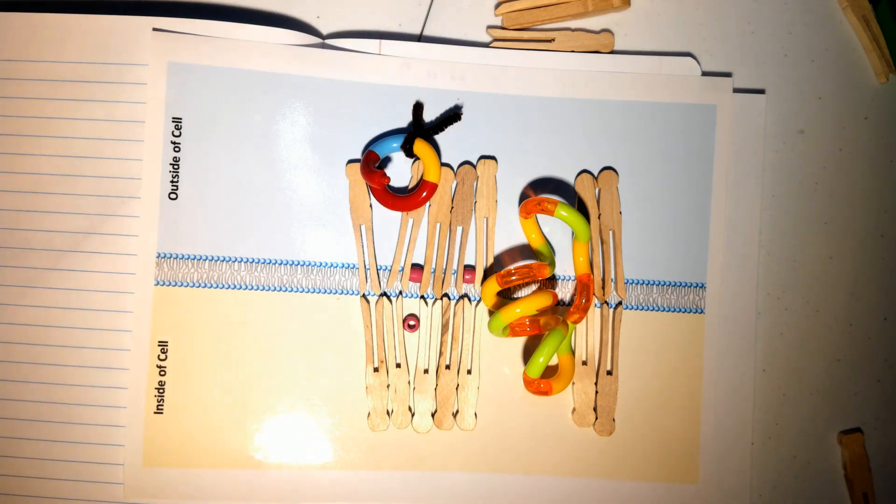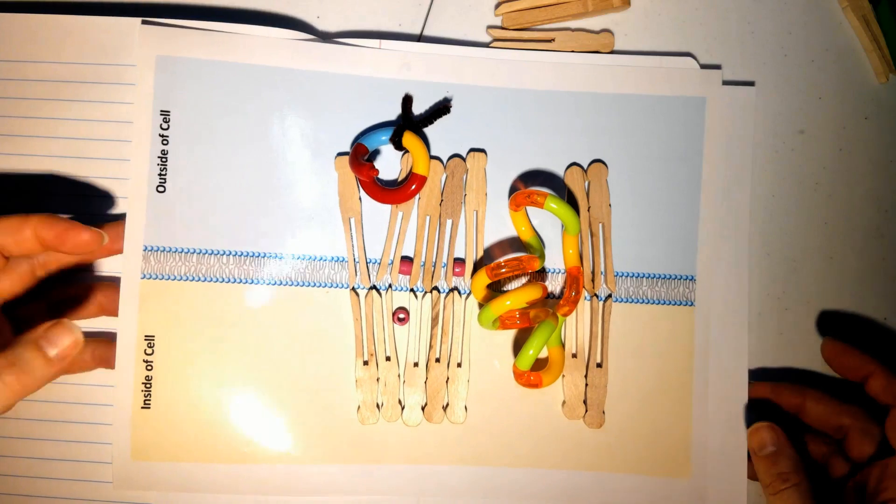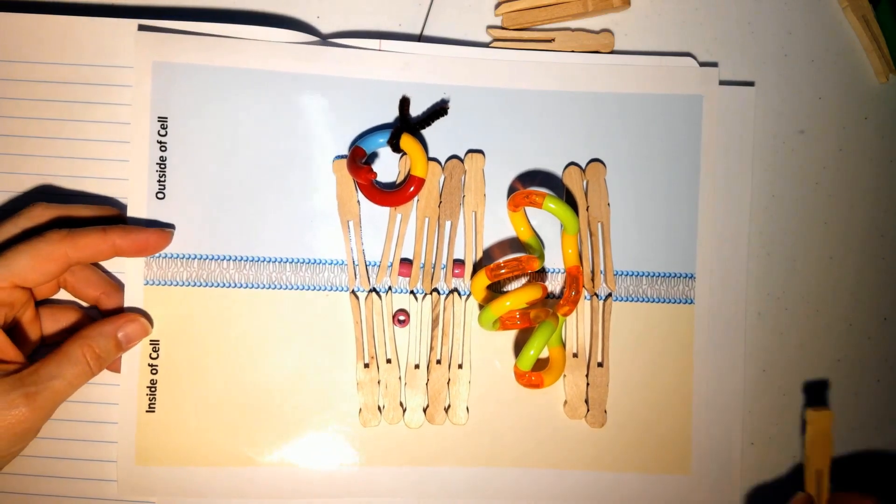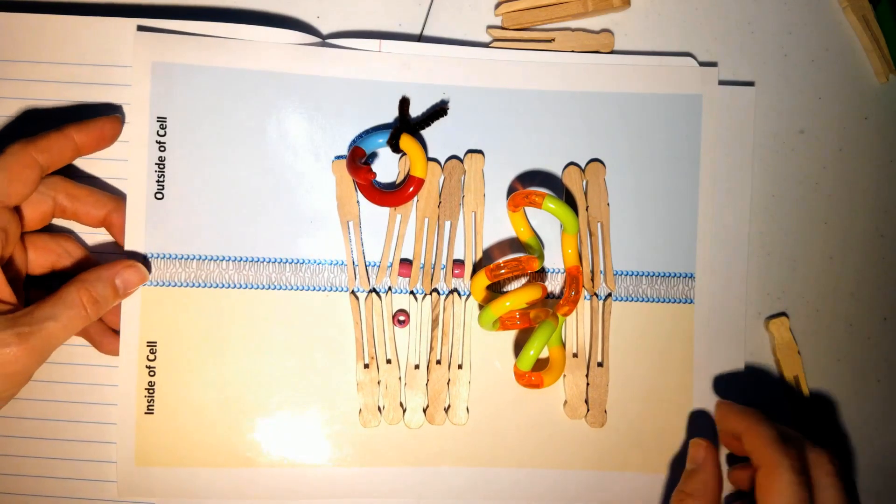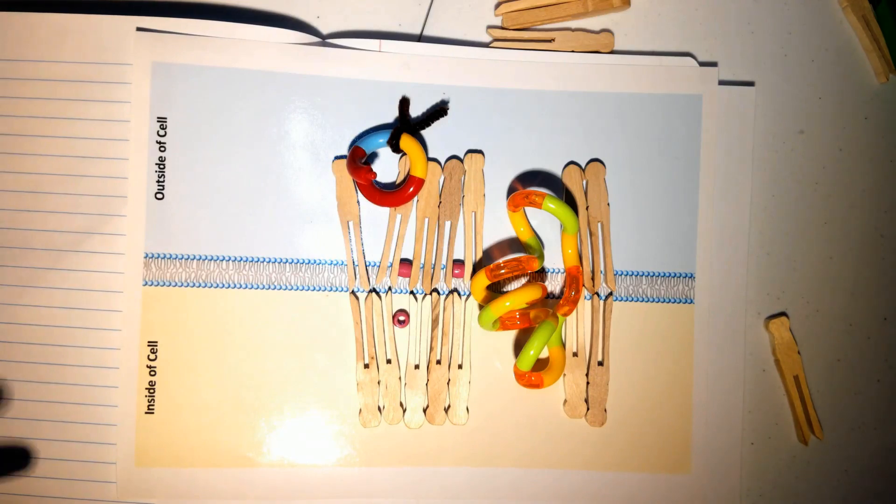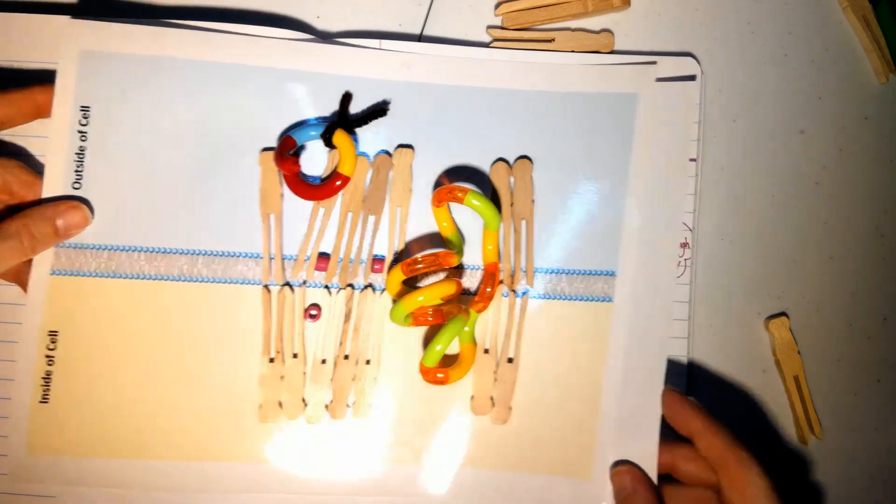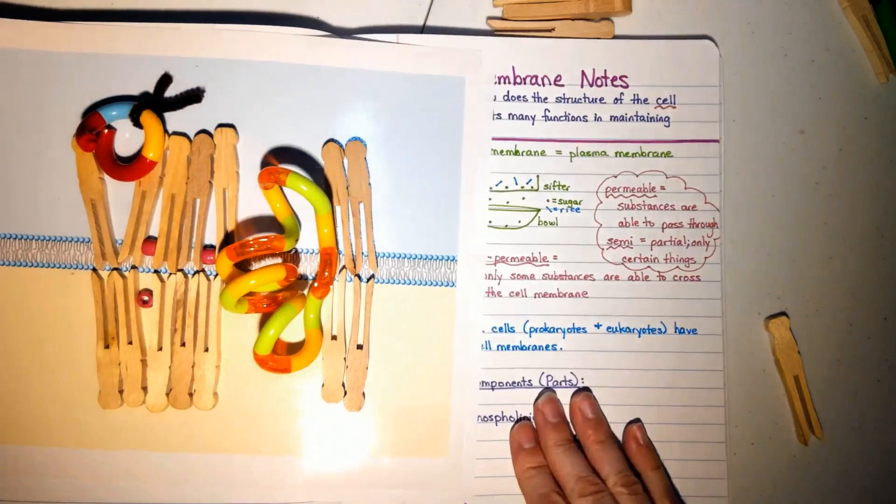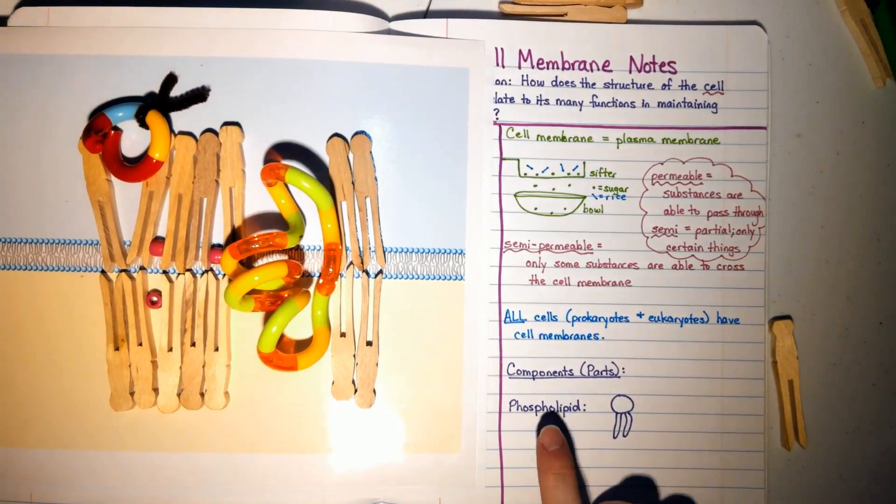Let's start with these little clothespin things. These clothespins are representing something called a phospholipid. So if we go back to our notes, phospholipids we said have a head and two tails.